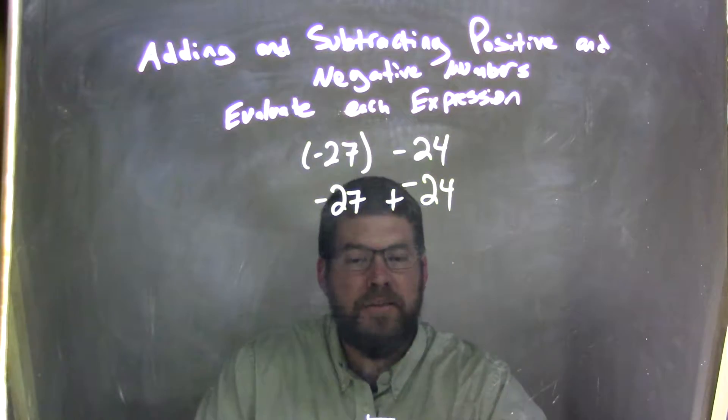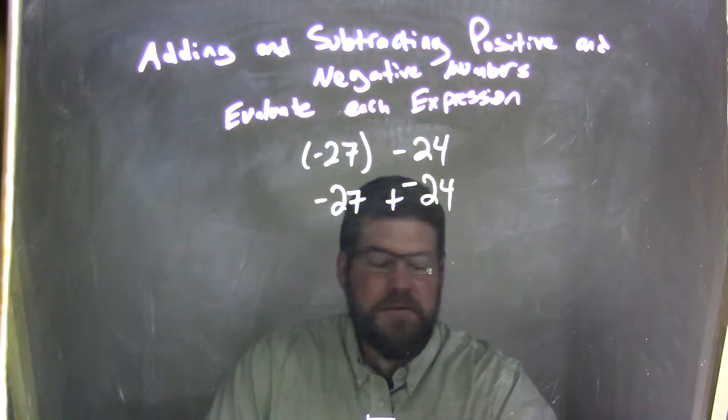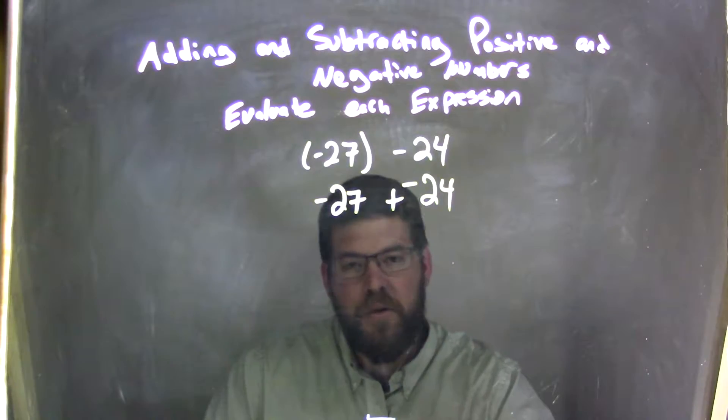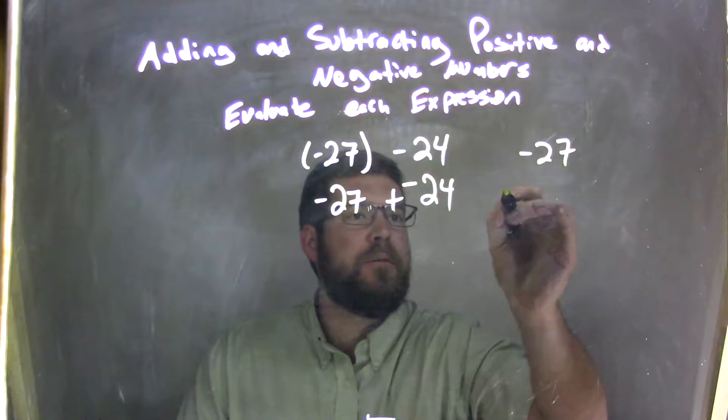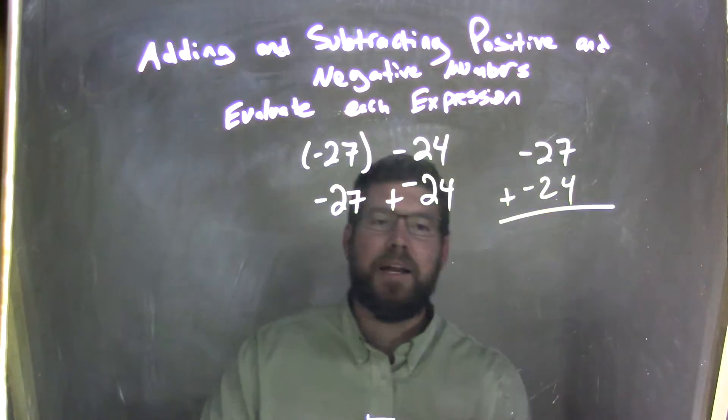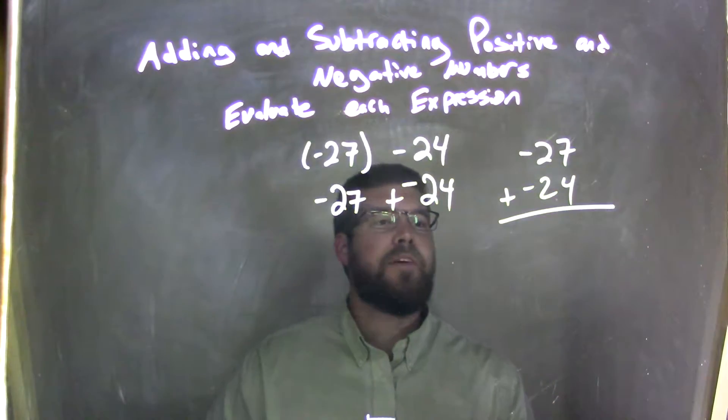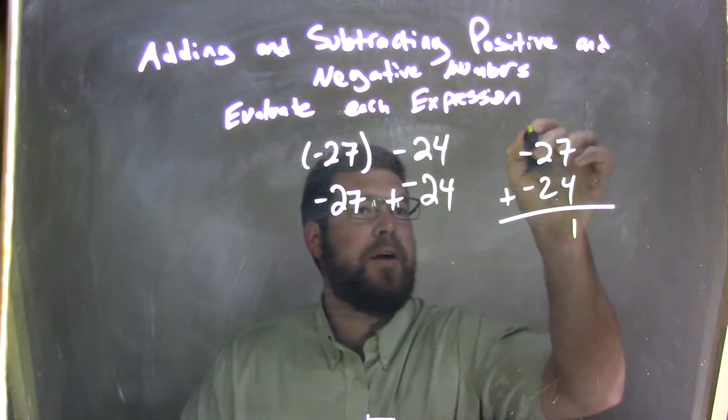Well if I add two negative numbers, it's just going to be very similar as if I added two positive numbers, just the result at the end is going to be negative. So if I have negative 27 plus a negative 24, we're moving in the negative direction together here. Well, 7 plus 4 is 1, we carry the 1.